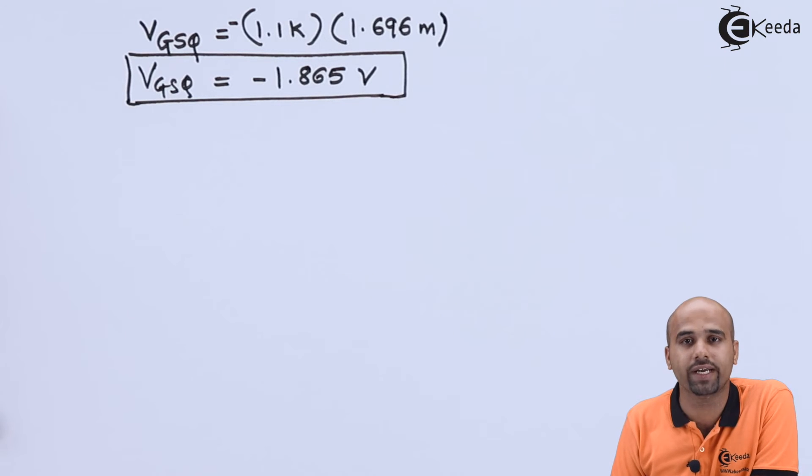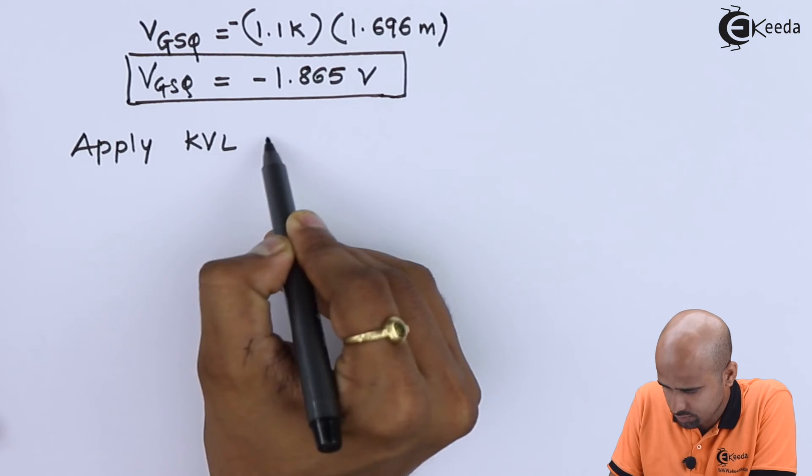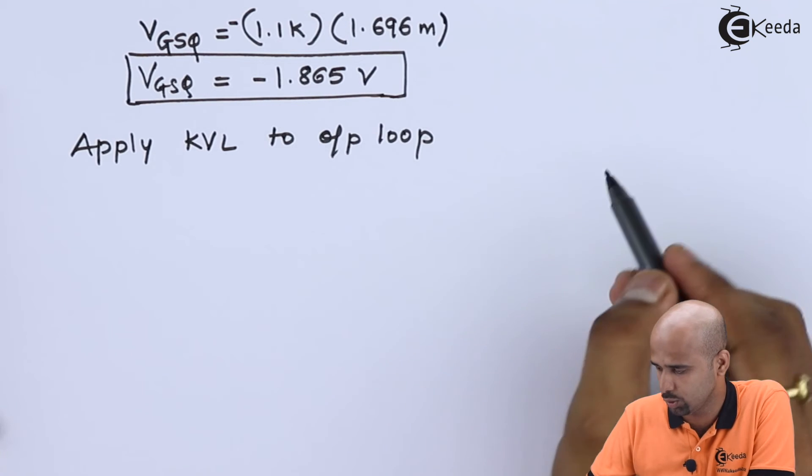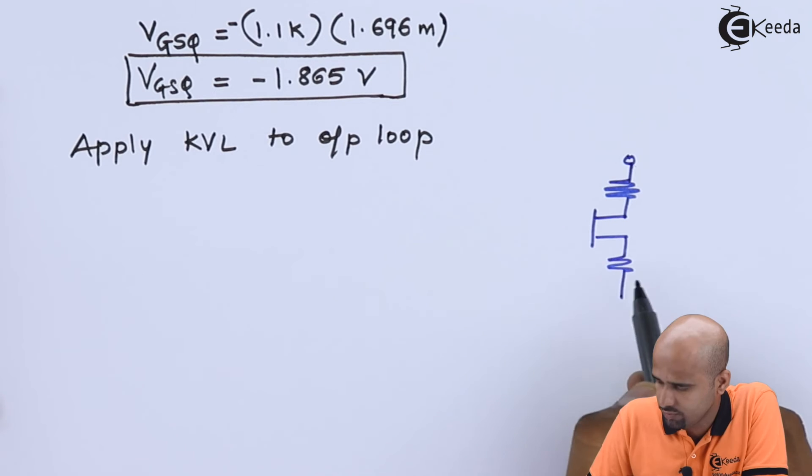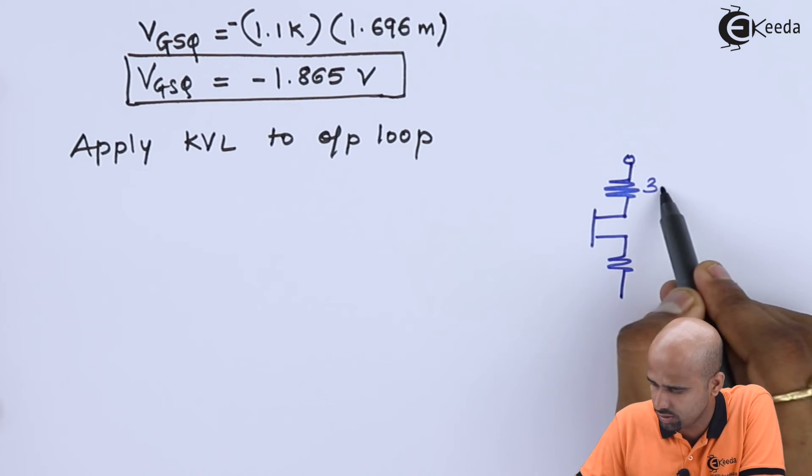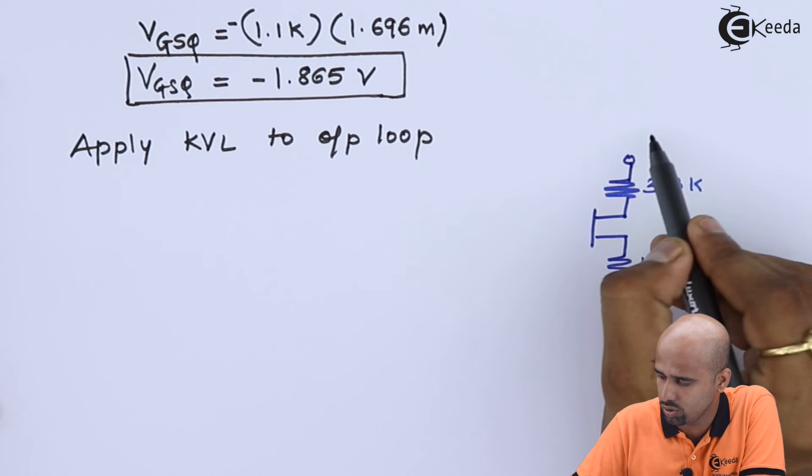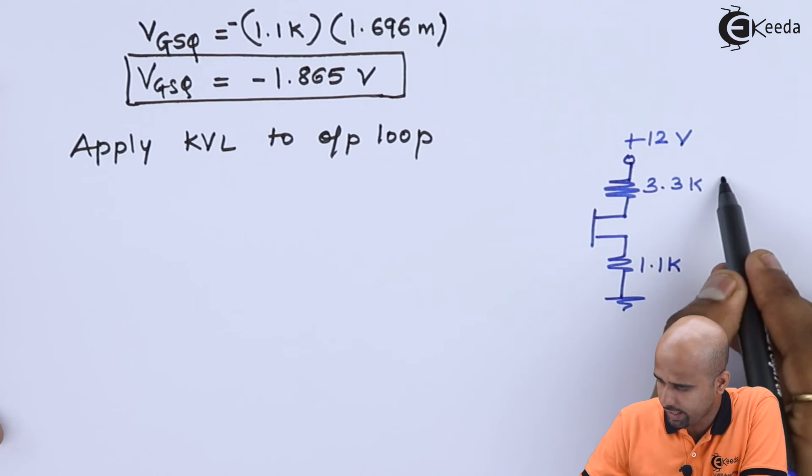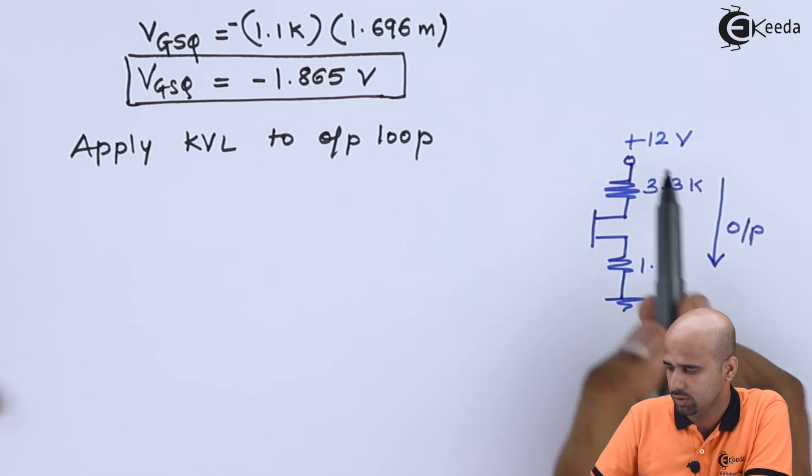Now what we will have to find? The third finding is VDSQ. So we will apply KVL to output loop. We will again redraw this circuit over here. We have nothing to do with the input circuit. We just relate this 3.3k, 1.1k, this is ground and this is plus 12 volts. We will apply here output KVL.